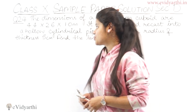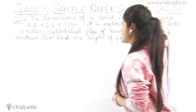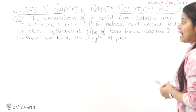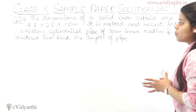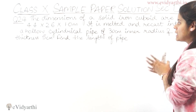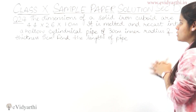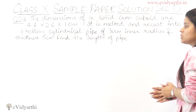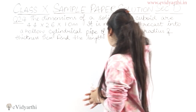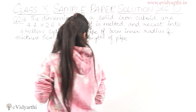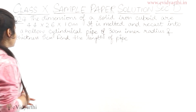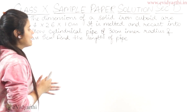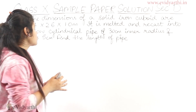Now coming to the next question. Question number 24 says: the dimensions of a solid iron cuboid are 4.4 × 2.6 × 1.0 meters. It is melted and recast into a hollow cylindrical pipe of 30 cm inner radius and thickness 5 cm. Find the length of the pipe.